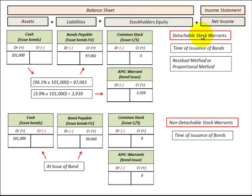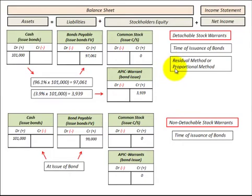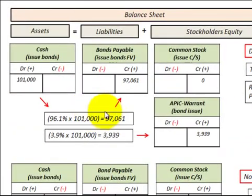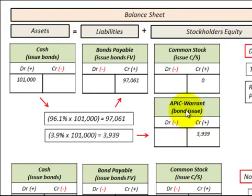If we look at detachable stock warrants, those are stock warrants that are separate from the bond — they can be sold separate from the bond. At the time of issuance, we use either the residual method or the proportional method. We have to allocate the difference between the equity portion of the bond and the debt portion of the bond, where the equity portion is assigned to what the stock warrants are worth when sold separately from the bond.